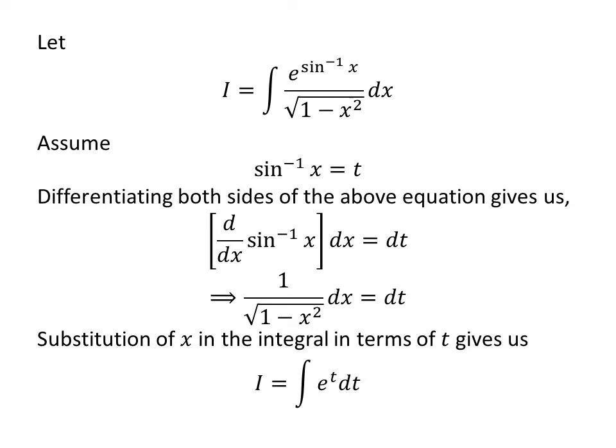Let us substitute arc sine of x by t and 1 upon square root of 1 minus square of x times differential of x by differential of t. So, i is equal to integral of exponential of t with respect to t.